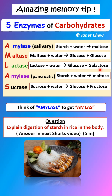A is for amylase — pancreatic amylase — which hydrolyzes starch to form maltose in the duodenum. Lastly, S is for sucrase, which hydrolyzes sucrose to form glucose and fructose in the ileum or small intestine.